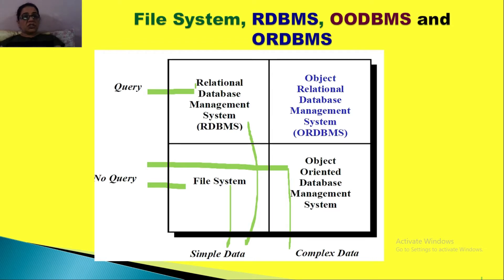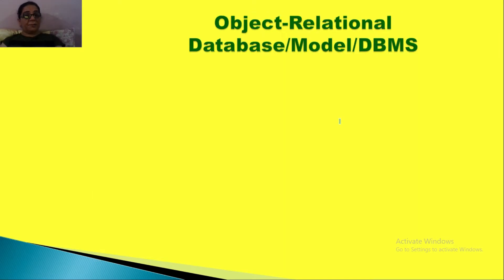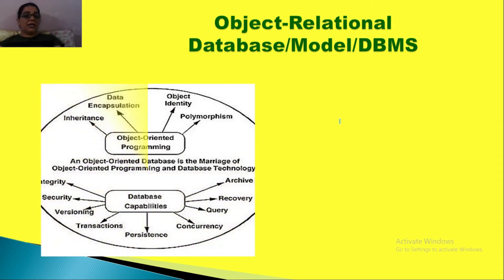So if a situation arises where we need to develop an information system where we need to run queries and the data is also complex, then the solution is Object Relational Database Management System, which is called ORDBMS. Today we'll talk about this — it is basically a hybrid approach where we have all the features of object-oriented programming.